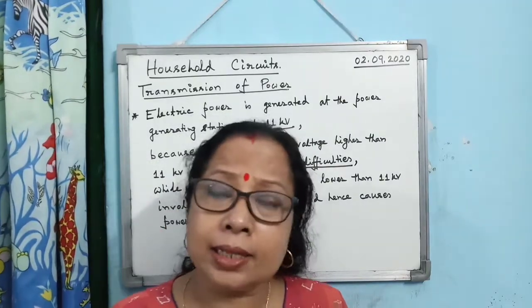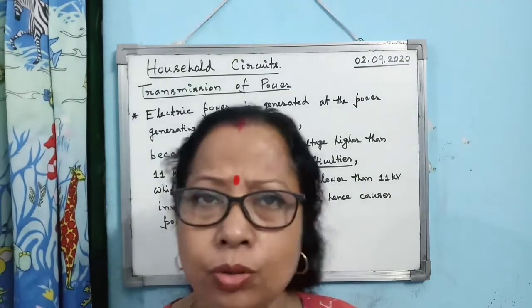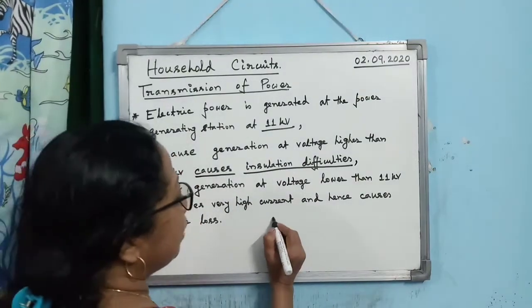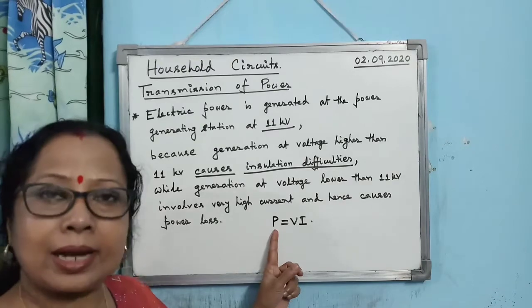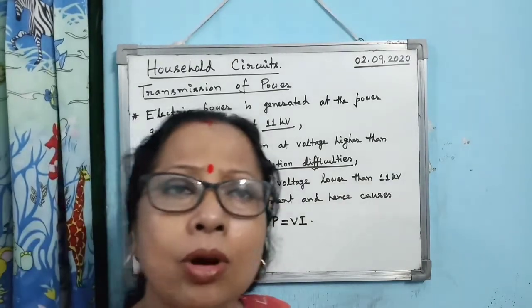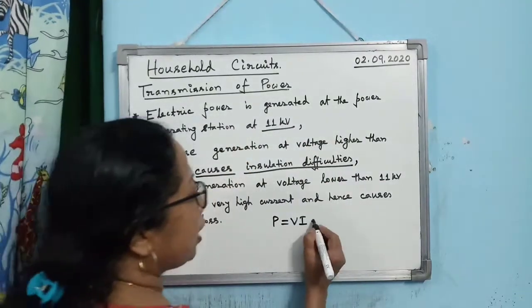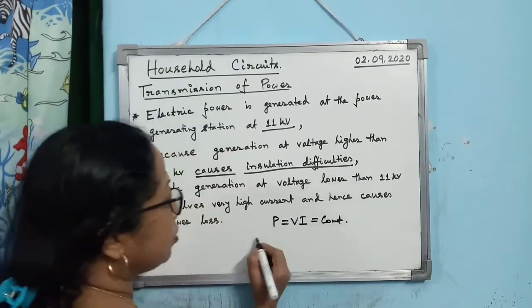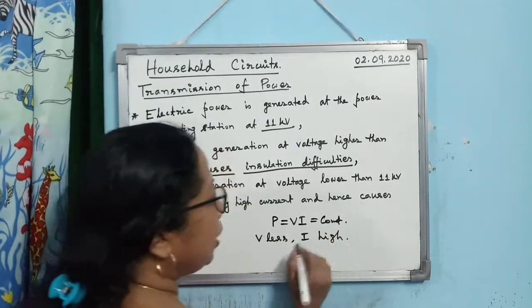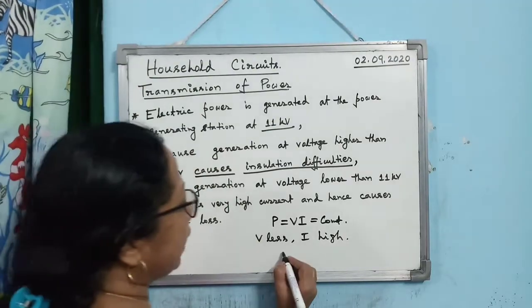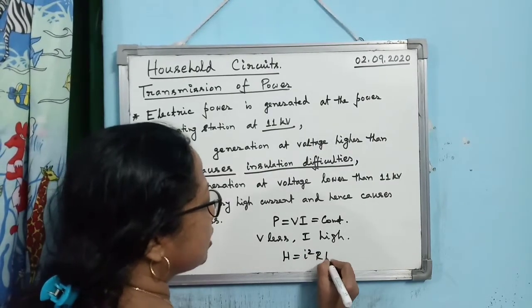The question may also arise: why not generate at a voltage less than 11 kilovolt? Power is given by P = V × I, which is constant for a given station. So if you make V less, then I will be high. We know that whenever a high current passes through a conductor, it produces heat according to the formula I²RT.